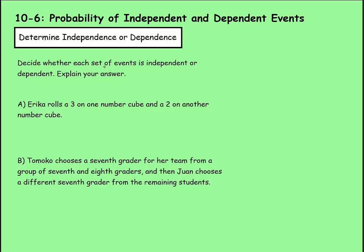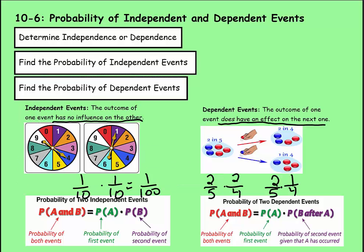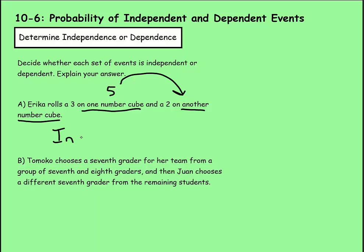First, let's decide whether each set of events is independent or dependent. Let's explain our answer. It says Erica rolls a 3 on one number cube and then 2 on another number cube. So she's rolling two separate number cubes. So if this one lands on a 5, this has nothing to do with the other number cube. And when things have nothing to do with each other, that means they're independent. And I explain that vertically because it takes me a long time to write that.